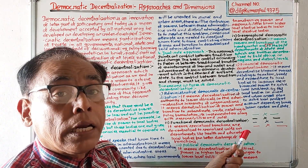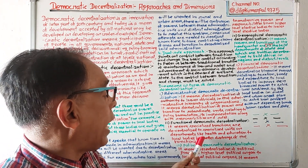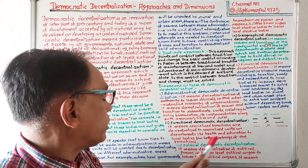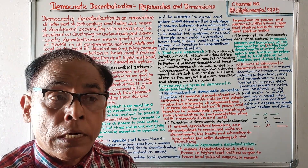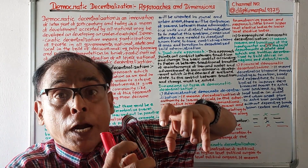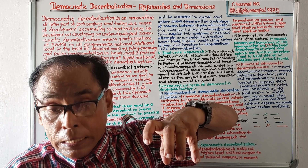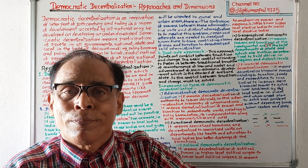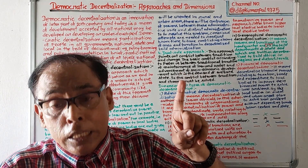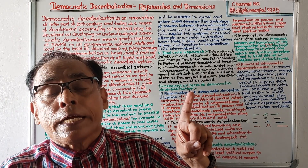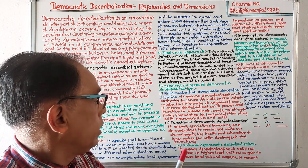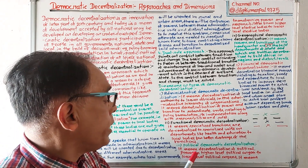Number two: Functional democratic decentralization. Functional democratic decentralization means whenever there is transfer of power from a specific department to another specific department at a lower level, it is known as functional democratic decentralization.